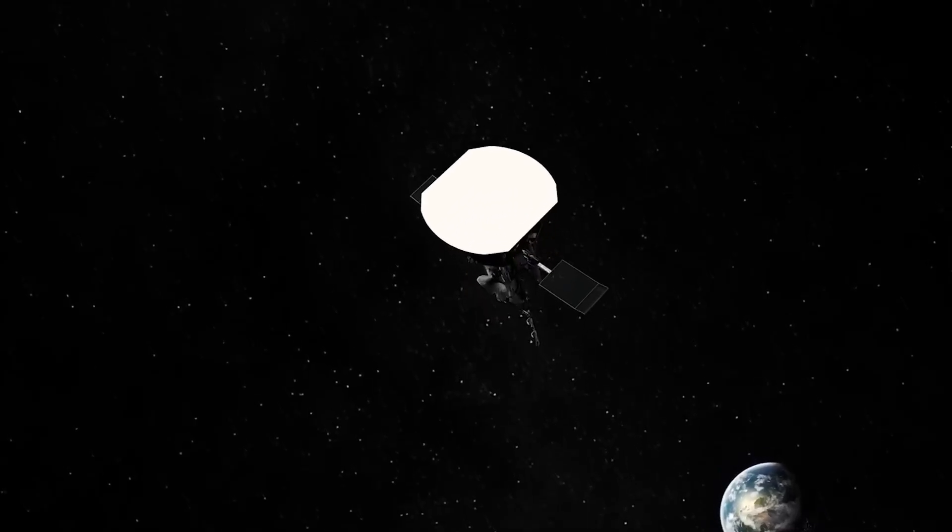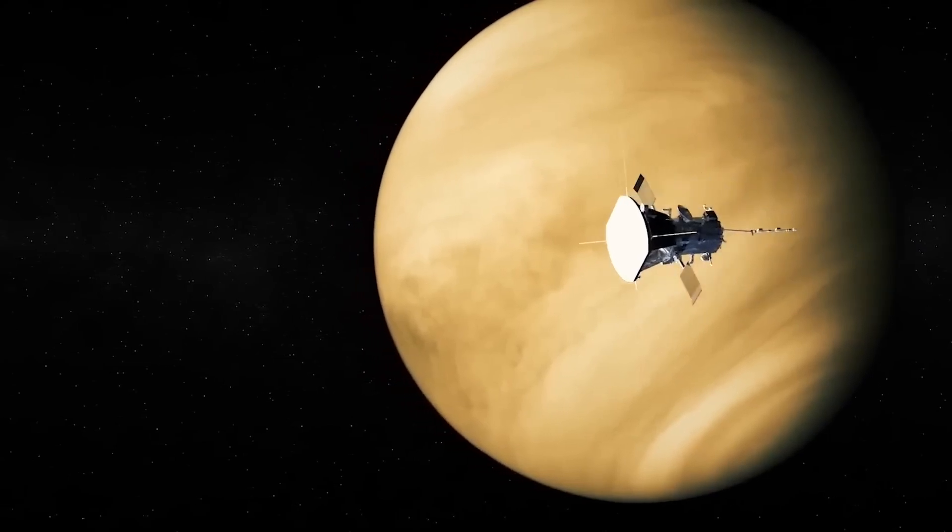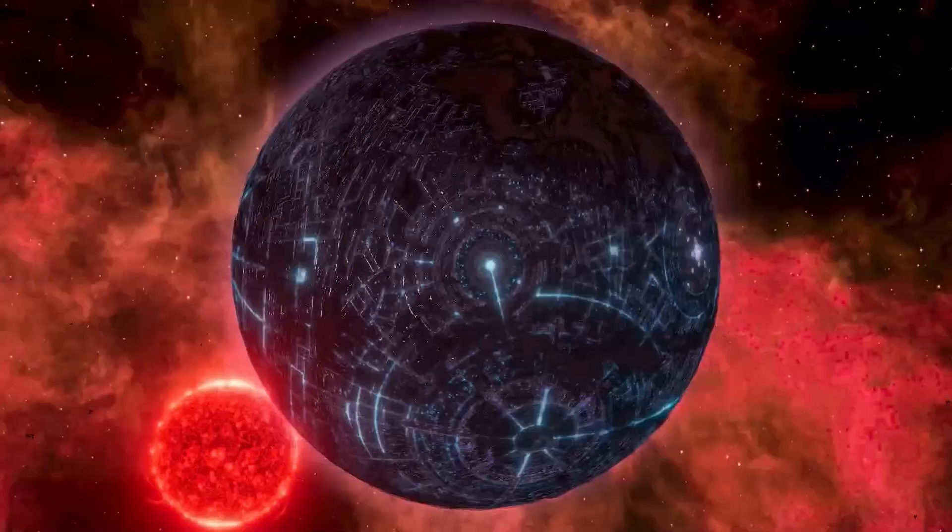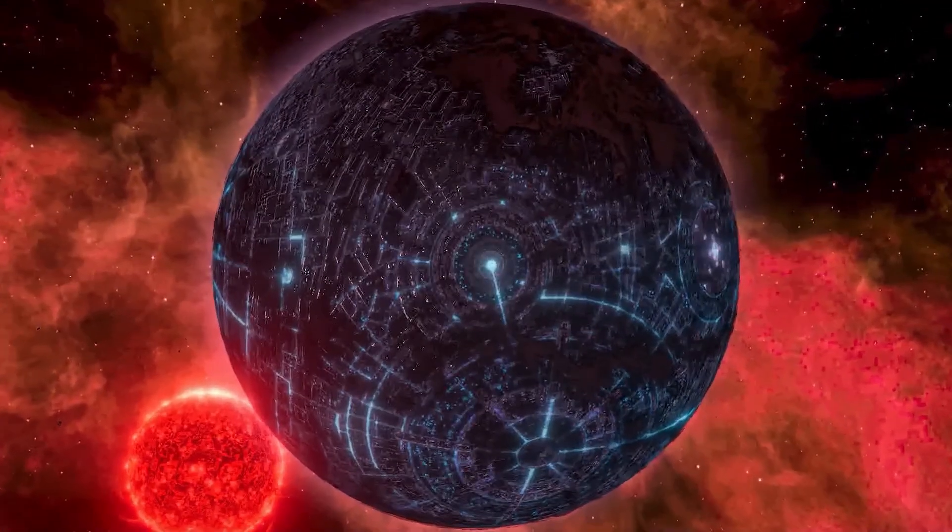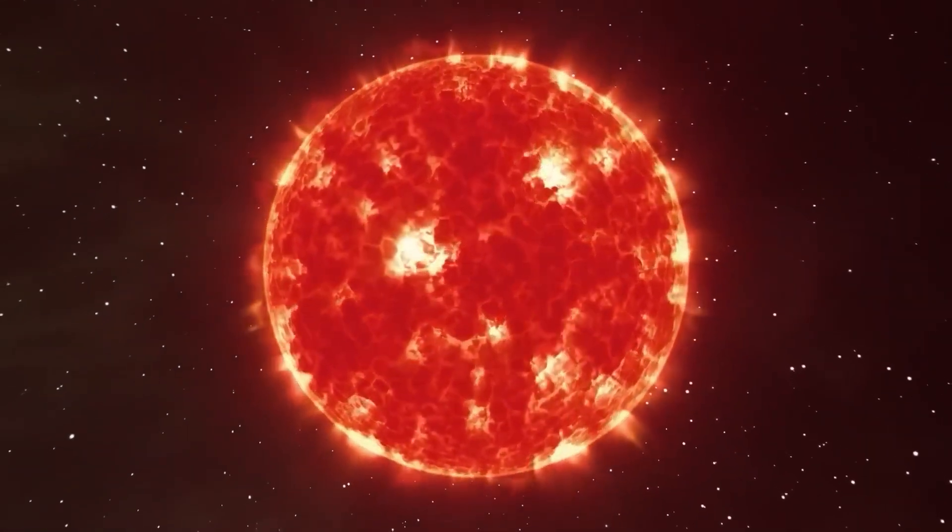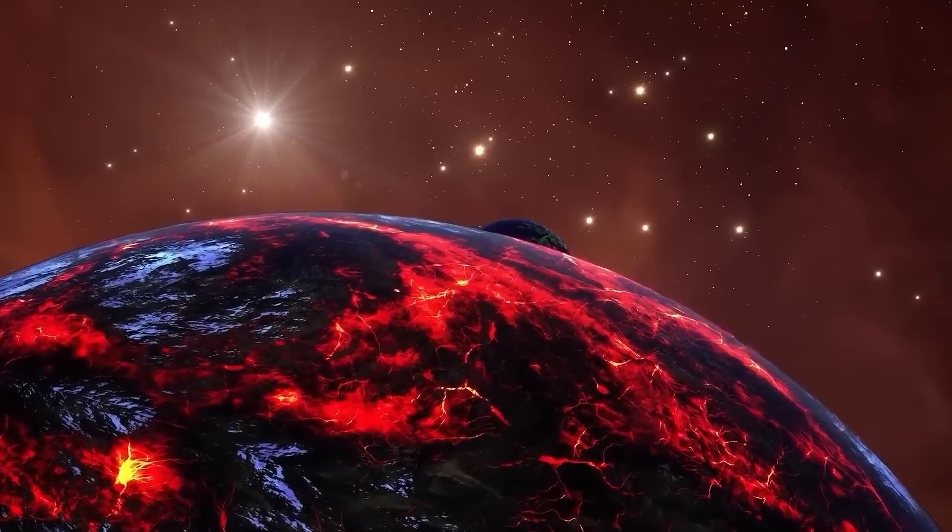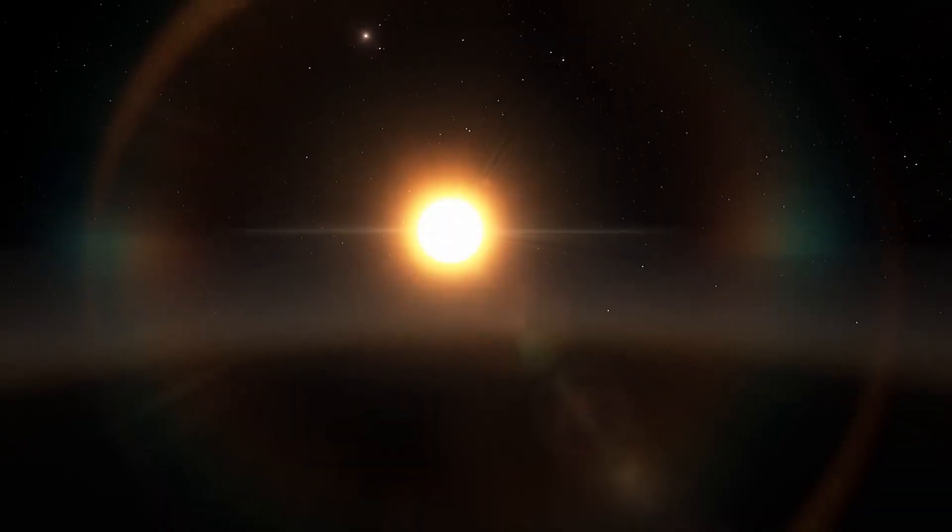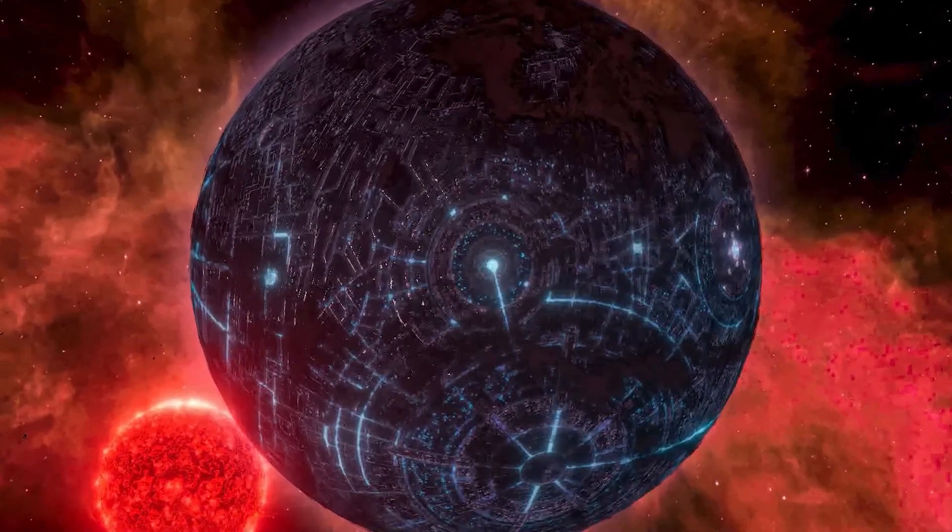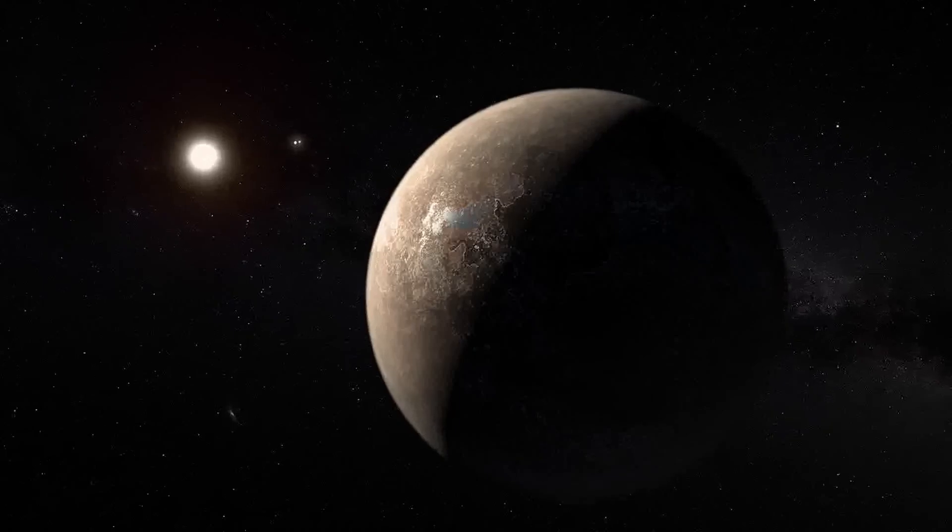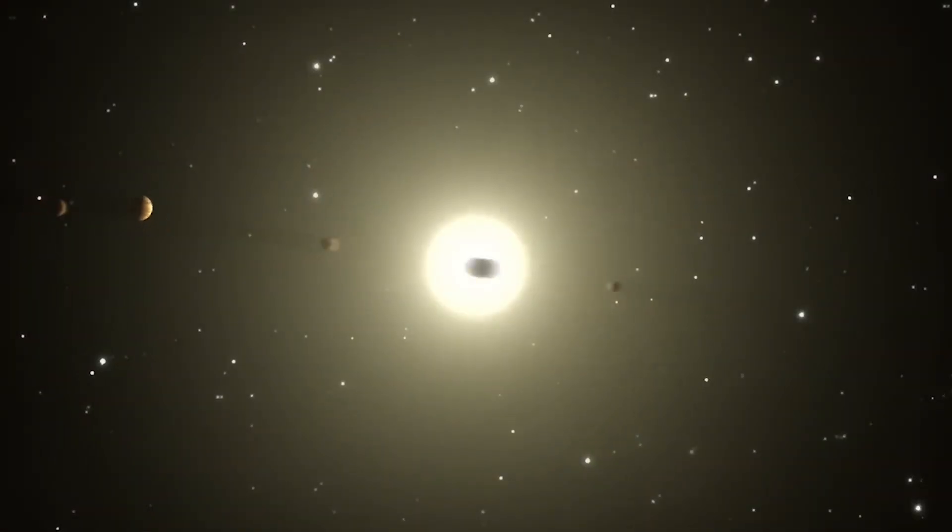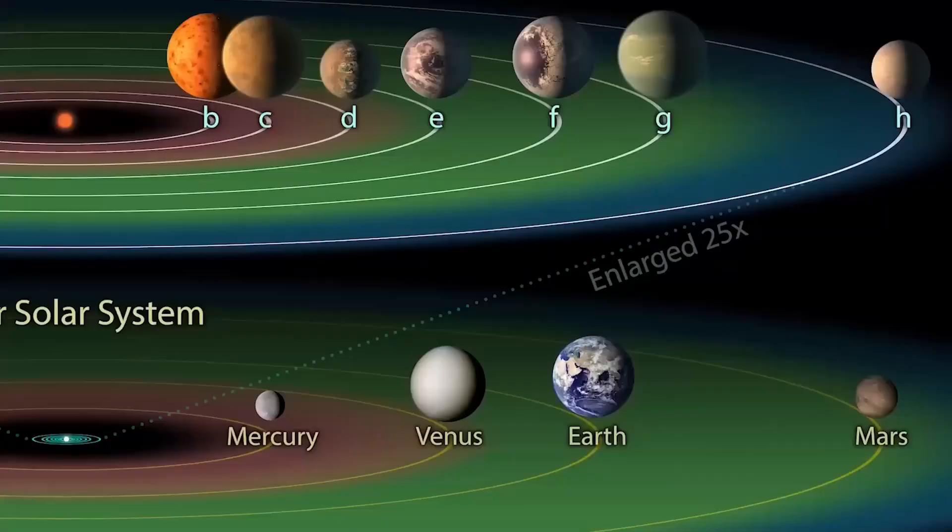This powerful telescope spotted something intriguing on Proxima Centauri b, an exoplanet far away. It noticed lights that looked similar to the lights you see in cities on Earth, suggesting the possible existence of an alien city on this distant planet. This idea has sparked a lot of excitement and curiosity among scientists. They are intrigued because this might just be the kind of discovery they've been hoping for, suggesting that there could be intelligent beings out there organizing their societies in ways we can't yet fully comprehend.